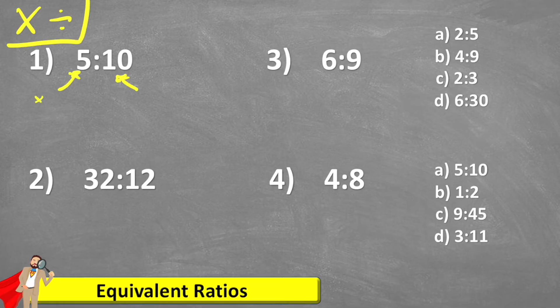So for example, I could multiply my five by two, but then I would have to multiply the 10 by two as well. So let's do that. Five times two is 10 and 10 times two is 20. So therefore 10 to 20 would also be an equivalent ratio.